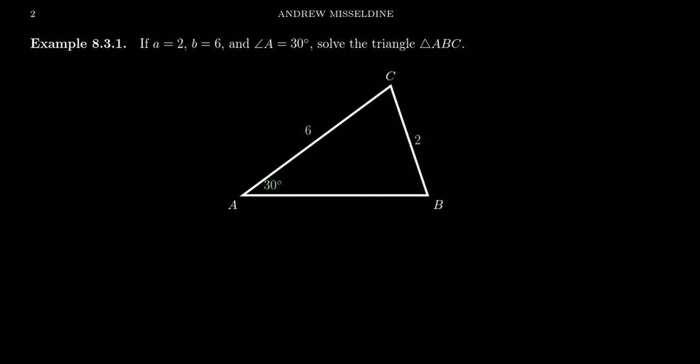In this video, consider the following oblique triangle with vertices ABC, where the side length a is given as 2, the side length b is given as 6, and the angle measurement of A is given as 30 degrees. I should mention that this is the side-side angle situation, the so-called ambiguous case.